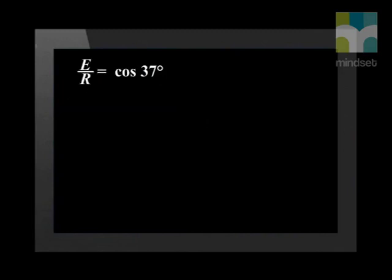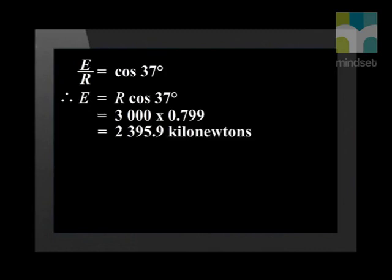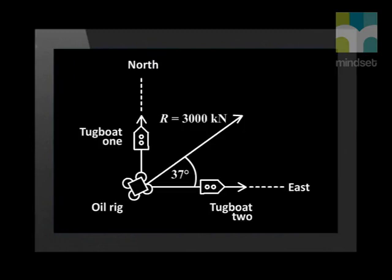E divided by R is the cosine of 37 degrees, and so E is R times cosine 37 degrees. We know how big R is, and so we can work out how big E is. Again, the answer must be in kilonewtons of force. So if you are the captain of one of these tugboats, you can watch the strain gauges on the towing line and make sure that your tugboat does not pull too hard. You don't want to crash that oil rig into the harbor wall.